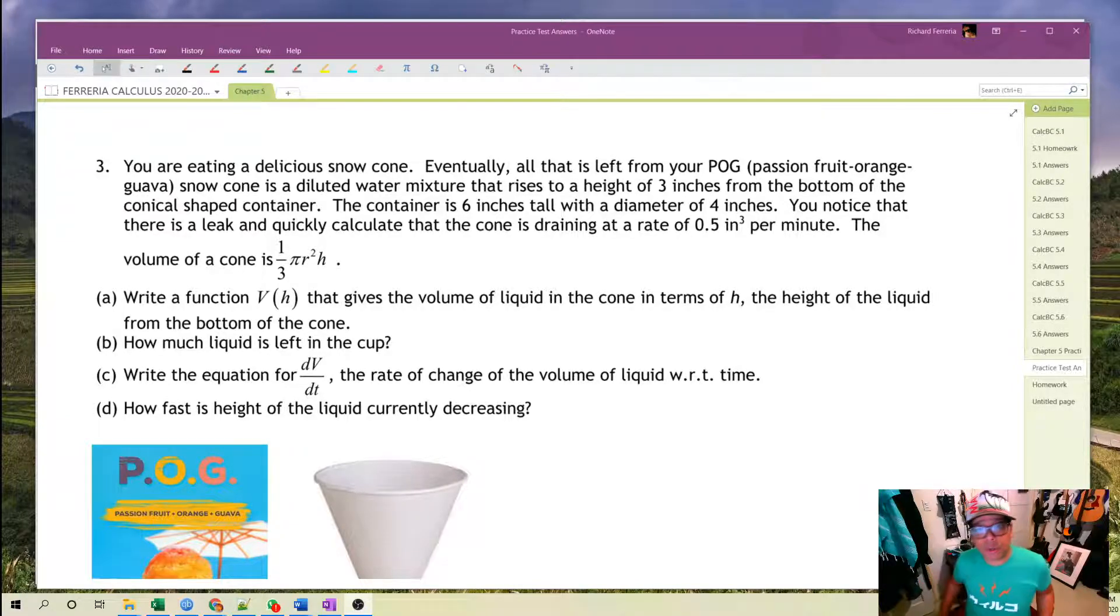You're eating a delicious snow cone, and eventually all that's left from your POG passion fruit, orange, and guava snow cone is a diluted water mixture that rises to a height of three inches from the bottom of a conical shaped container. The container is six inches tall with a diameter of four inches, and you notice that there is a leak and quickly calculate that the cone is draining at a rate of five cubic inches per minute.